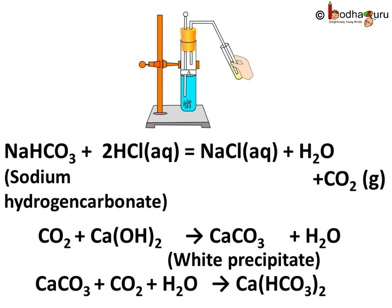Here again, the produced carbon dioxide reacted with lime water to give a white precipitate of calcium carbonate and water. After passing a little more carbon dioxide, the precipitate would vanish as calcium carbonate would get converted into soluble calcium hydrogen carbonate, also known as calcium bicarbonate, which is Ca(HCO₃)₂.